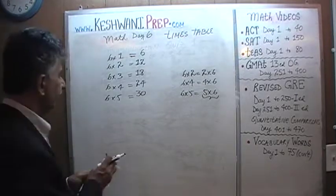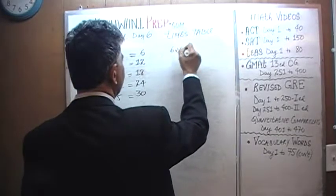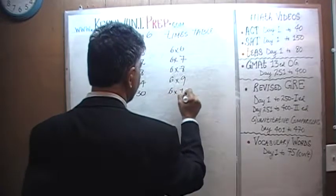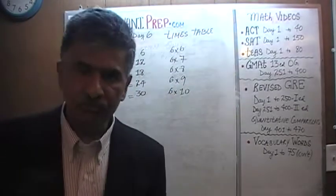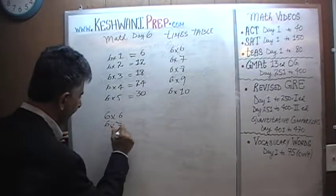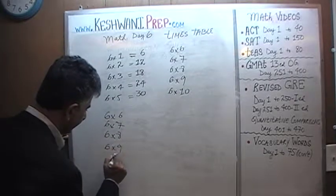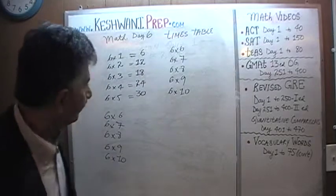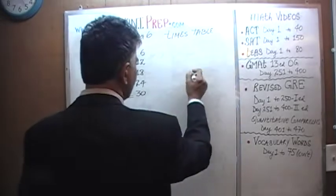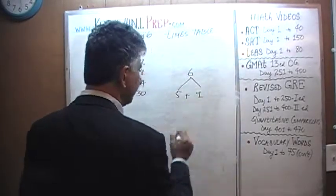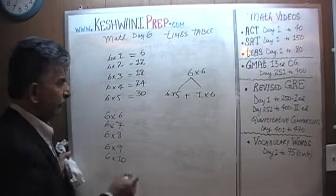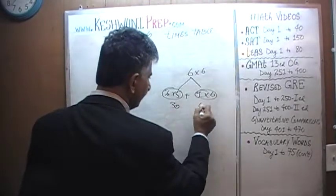Let's do the next five: six sixes, six sevens, six eights, six nines, and six tens. For six sixes, take the six and break it up into five plus one. Six sixes are going to be six fives and six ones. Six fives are thirty, and six ones are six. So six sixes are thirty-six.